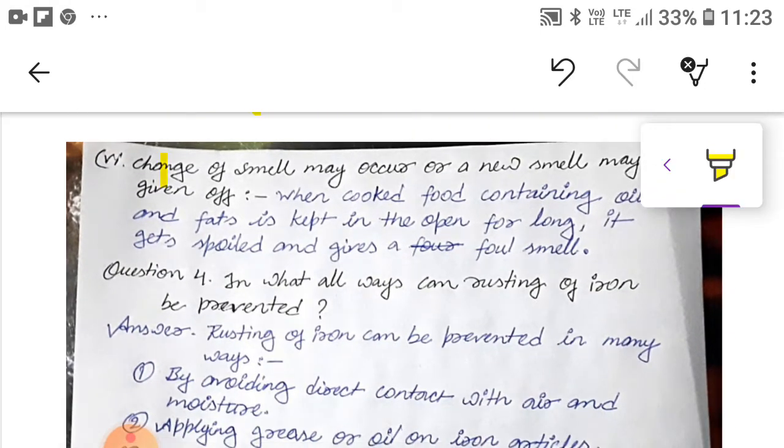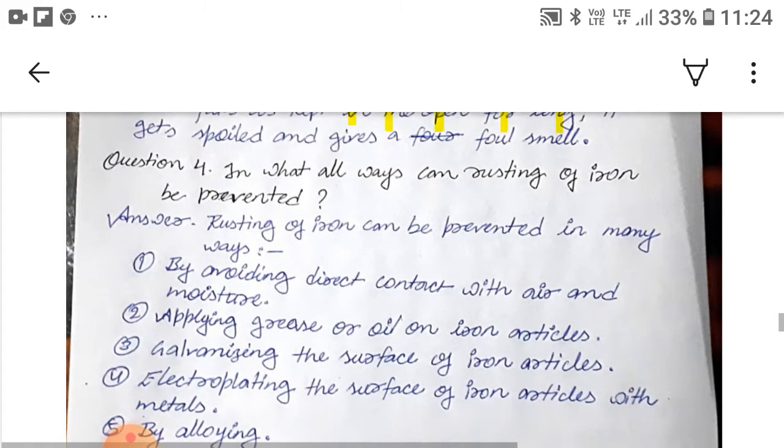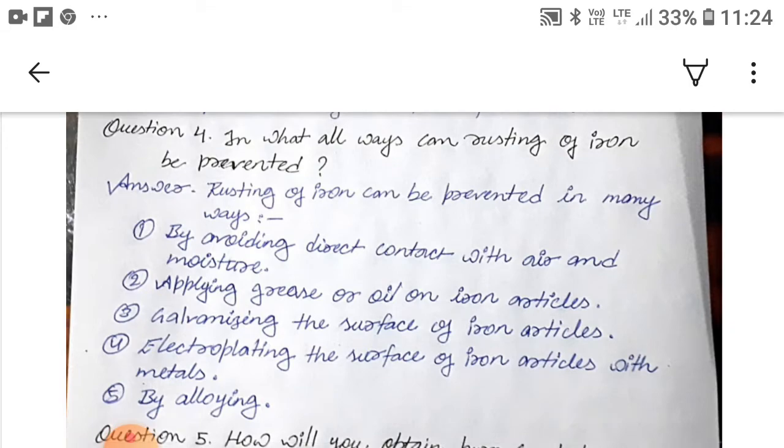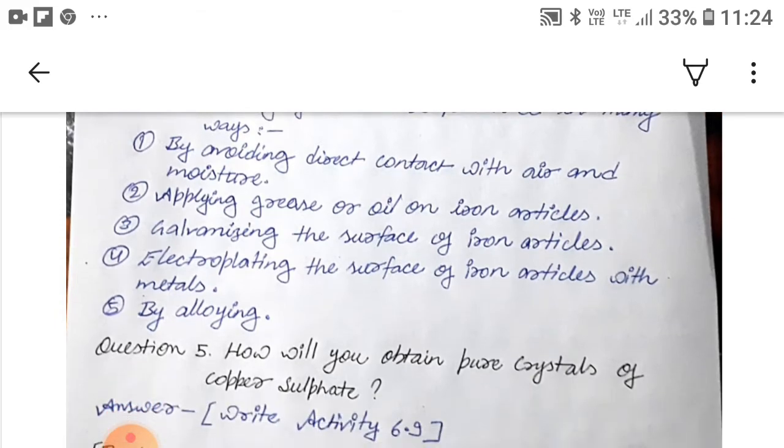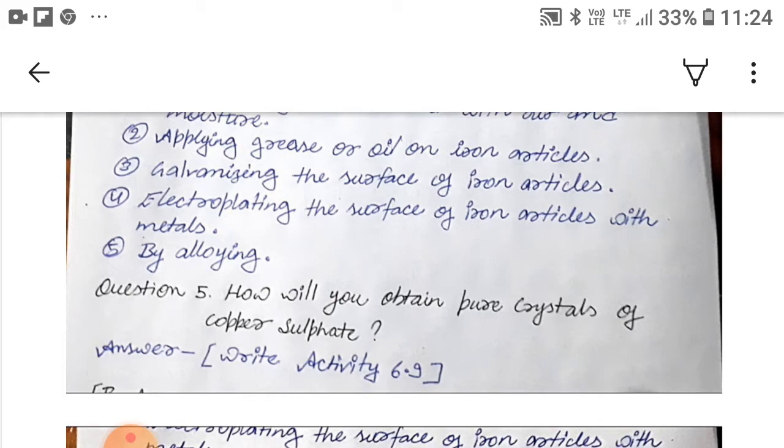Fourth, absorption or evolution of heat, light or any other radiation. When water is added to quicklime, heat energy is evolved. Fifth, sound may be produced. When baking soda is added to vinegar, carbon dioxide gas is produced with a hissing sound. Six, change of smell may occur or a new substance may be given off. When cooked food containing oil and fats is kept in the open for long, it gets spoiled and gives a foul smell. Question 4, in what all ways can rusting of iron be prevented?